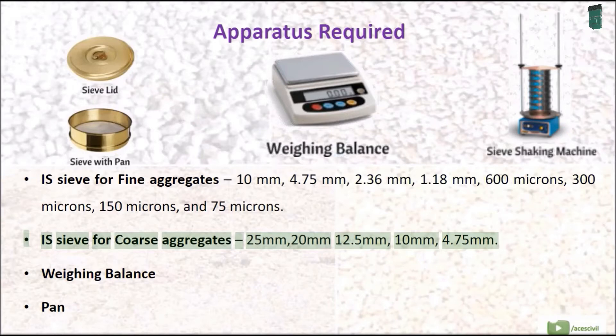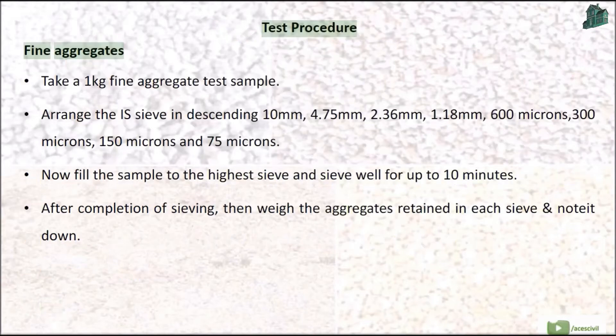IS sieve for coarse aggregates: 25 mm, 20 mm, 12.5 mm, 10 mm, 4.75 mm. Weighing Balance and Pan.